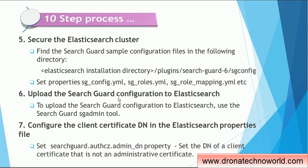The fifth step is securing the Elasticsearch cluster. For securing Elasticsearch, we need to configure SearchGuard. The SearchGuard sample configuration file is present under the installation directory of Elasticsearch. Under the plugins folder, you will see SearchGuard, and under that, the SearchGuard config file. In that file, we have to set the properties for search_guard_config, search_guard_roles, and search_guard_roles_mapping.yml files. Once we are done with this, we have to upload the SearchGuard configuration to Elasticsearch using the SearchGuard admin tool.